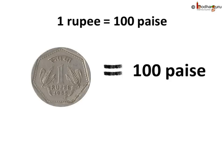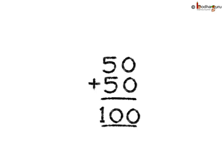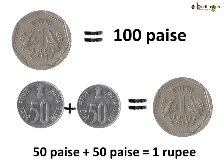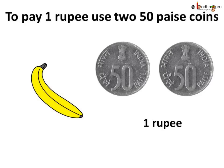Well, you can pay 1 rupee using 50 paise coins too. Because 1 rupee is the same as 100 paise. And we know, 50 plus 50 is equal to 100. So if we take 2 fifty-paise coins, that is 50 paise plus 50 paise, we have 100 paise. And we know, 100 paise is the same as 1 rupee. So 2 fifty-paise coins is the same as 1 rupee coin. To buy that banana worth 1 rupee, if you don't have a 1 rupee coin, we can pay 2 fifty-paise coins. Because 2 fifty-paise coins is equal to 100 paise, and 100 paise is the same as 1 rupee.